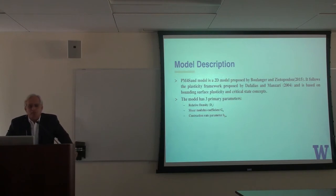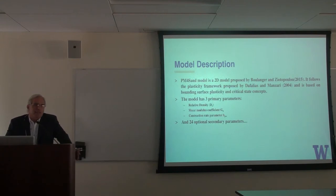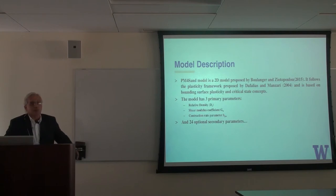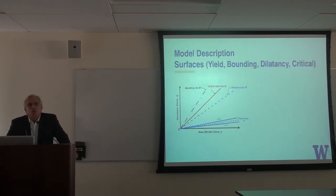So if you know these three parameters, there are also 24 additional parameters. But the authors — Ross and Katerina — have calibrated them for general soil conditions, so you only have to calibrate the three to represent your particular soil. It's basically a Mohr-Coulomb model, really, when you look at it in the Q-P space.